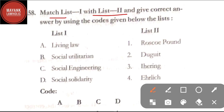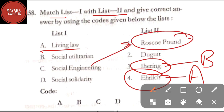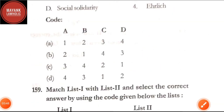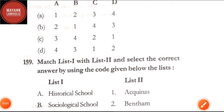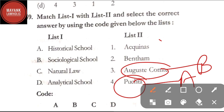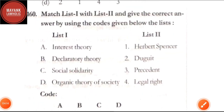Question number 158: match list one and list two — living law is related to Ehrlich; social utilitarianism is related to Ihering; social engineering is related to Roscoe Pound; social solidarity is related to Duguit. The correct code is option D. Question number 159: match historical school to Puchta; sociological school to Auguste Comte; natural law to Thomas Aquinas; analytical school to Bentham.